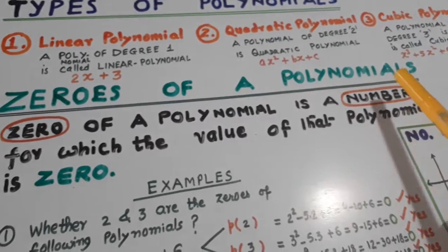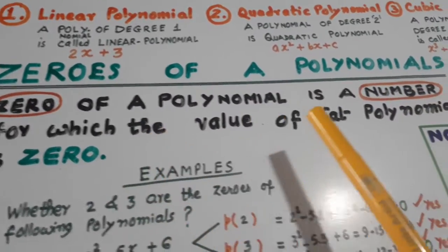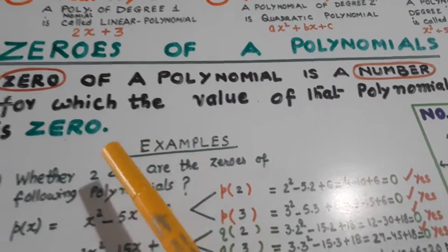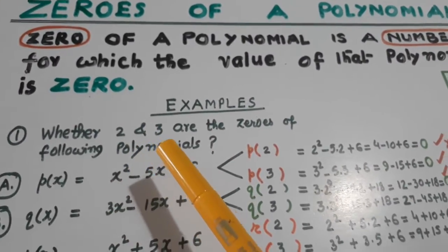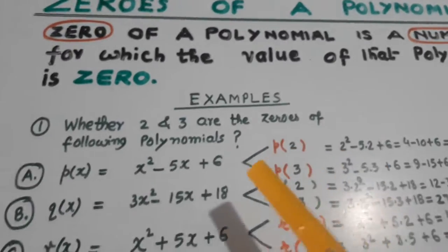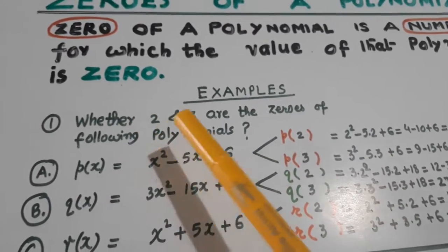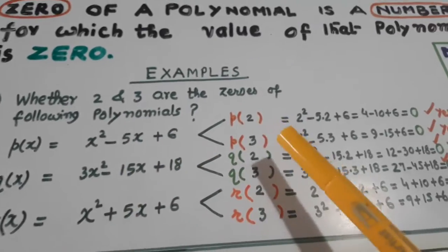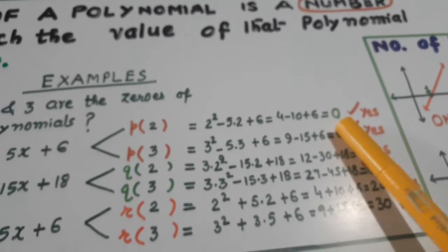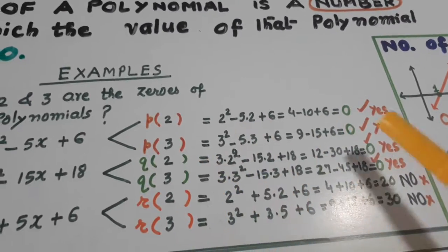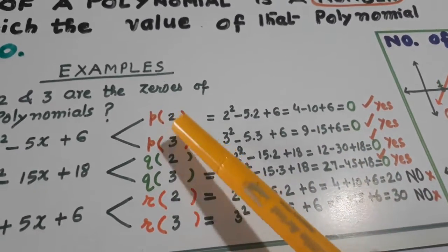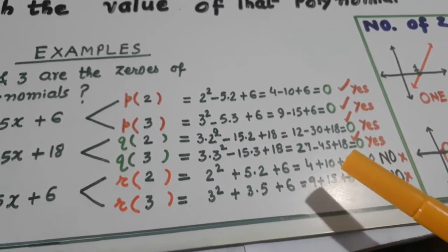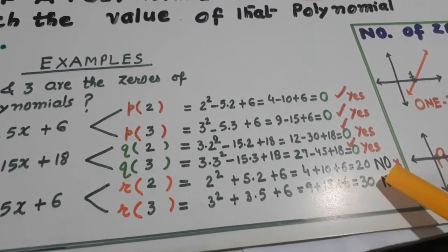Zeros of a polynomial is a number for which the value of polynomial is zero. X ki wo value joh polynomial ko zero bana de. Ab dekhiye 2 aur 3 hai. Pata karte hain kya ye zeros hain. 2 put kia, zero aa gaya, yes. 3 put kia, zero aa gaya. So 2 and 3 are the zeros. Similarly here, yes, they are the zeros. Yahan pe nahi hai, they are not the zeros.